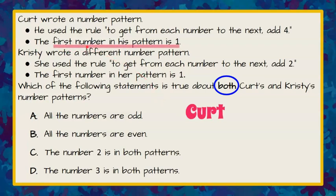Kurt has a first number in his pattern that is one. So we're going to start his number sequence with the number one. Then his rule that he used was to get from each number to the next you add four. So one plus four is five. Five plus four is nine.